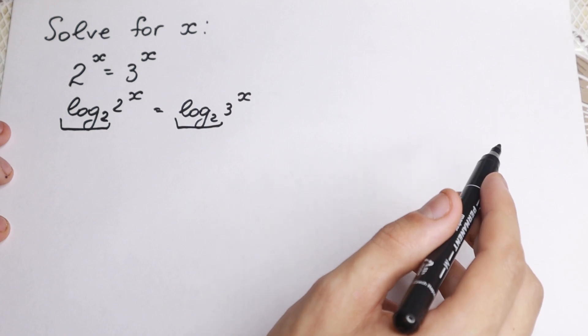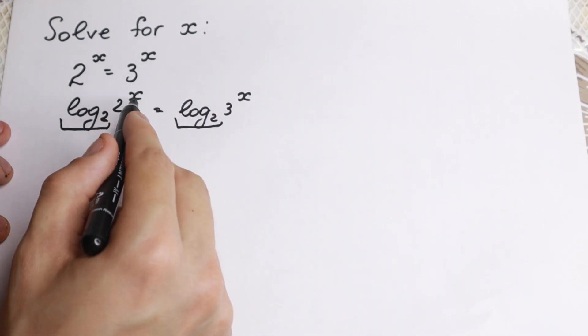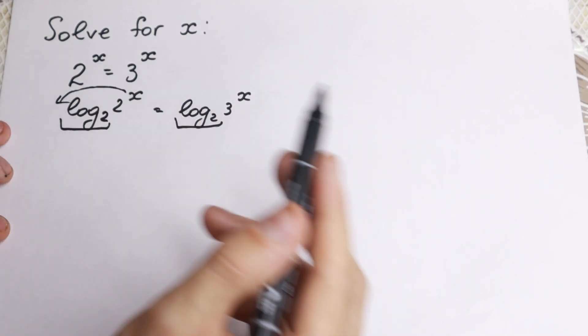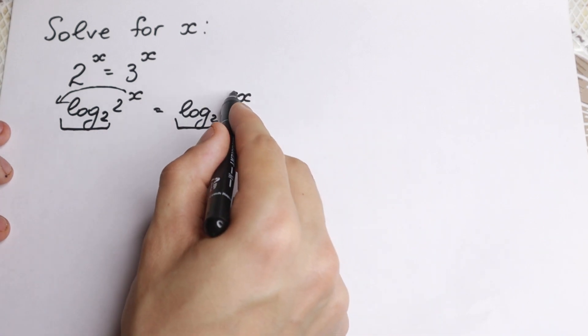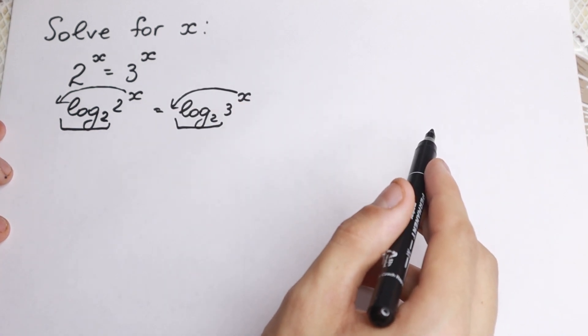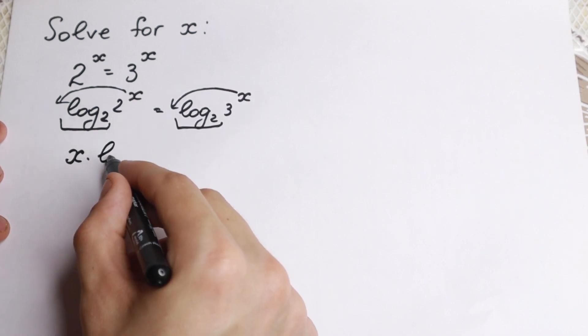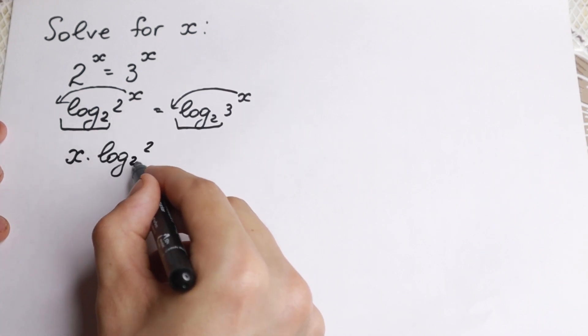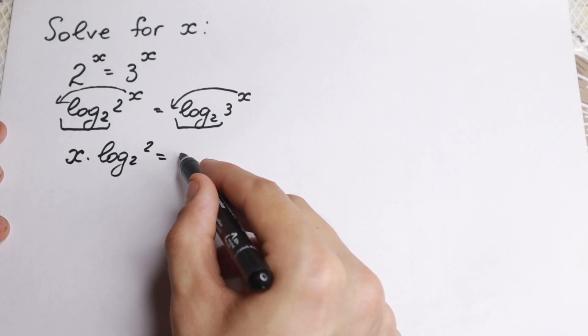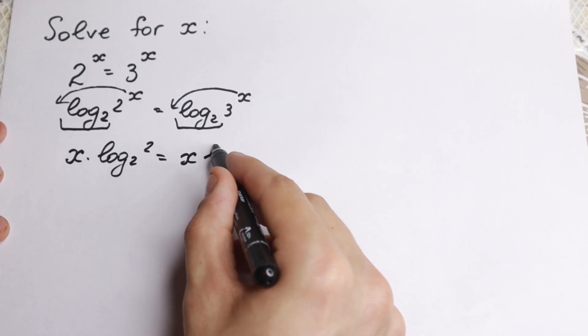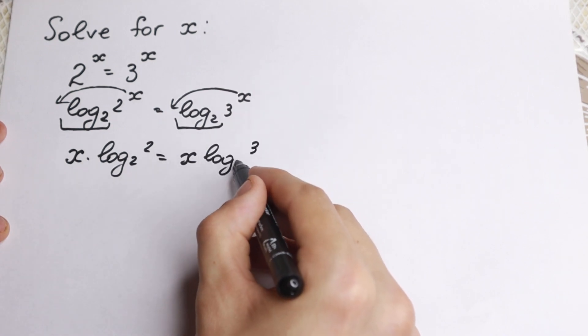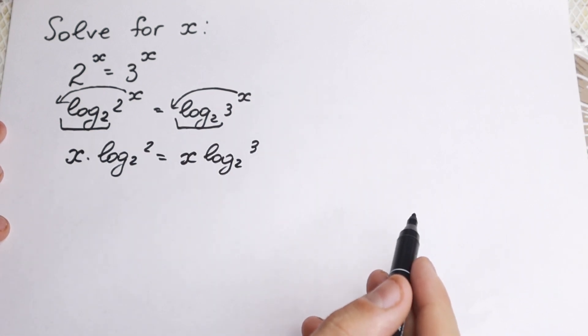Right now if we have a power right here, exponents, if you know a little bit about logarithm, this goes right here. This is the main log property. So we have x times logarithm 2 to base of 2 equal to x log 3 base of 2. We just use the log property.